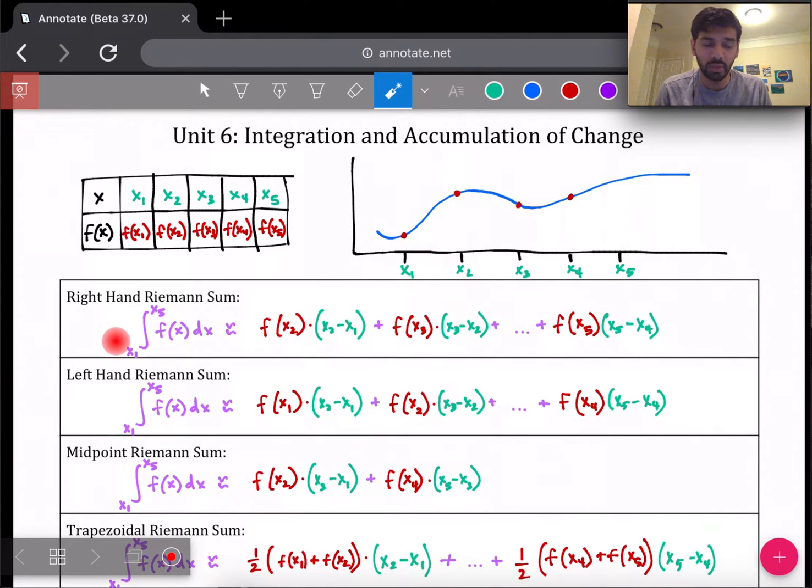So for a right-hand Riemann sum, in general, what we're doing is we're looking at all of our intervals here from x1 to x5 for this arbitrary graph, if we're being asked to approximate the area of this integral from x1 to x5. So you'll notice each integral here, x1 to x5, that's the bounds. And I put approximation equals signs here, the little squiggly equals signs, because that's indicating that I'm approximating the integral, meaning I'm approximating the area under the graph.